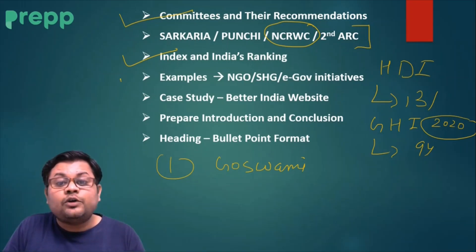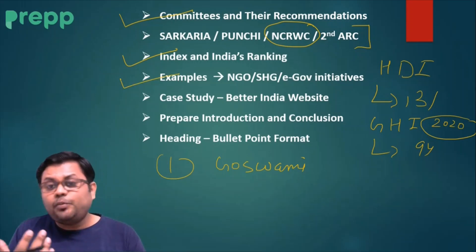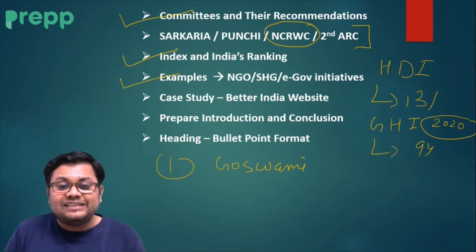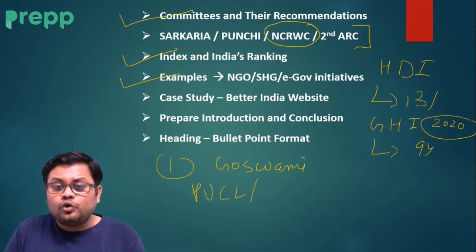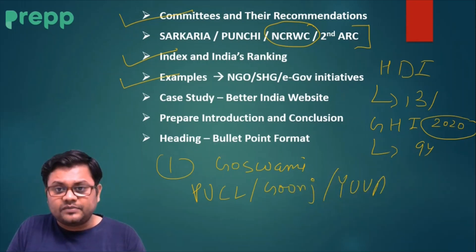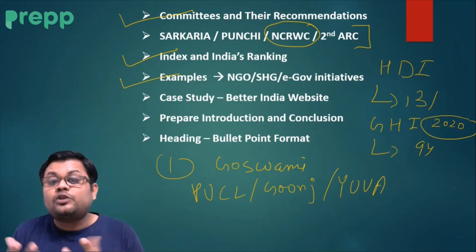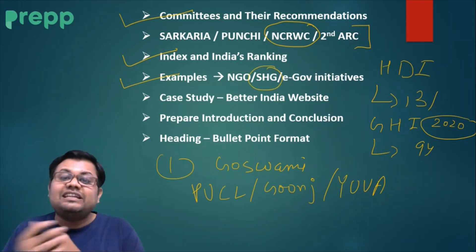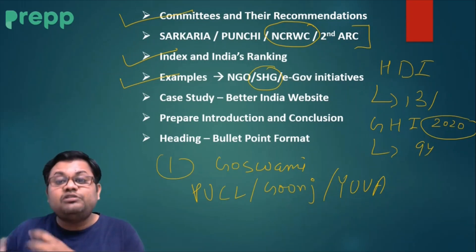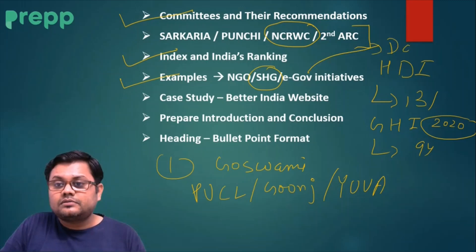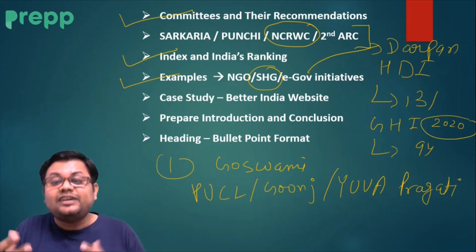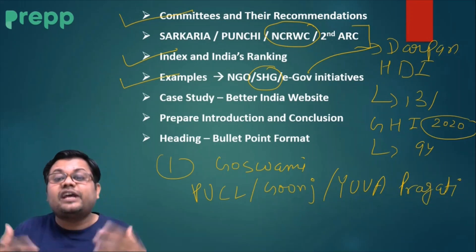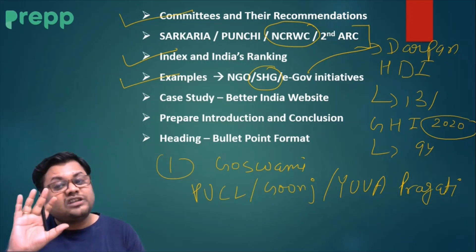You need to give plenty of examples. For instance, if a question on NGOs comes, mention specific NGOs like PUCL or Goonj. For SHGs, know which are important — like Kudumbashree in Kerala. For e-governance, know what initiatives are being taken, such as Darpan and Pragati. All this information should be ready with you beforehand; don't be in the exam hall thinking about it — that wastes time and you may leave questions unanswered.